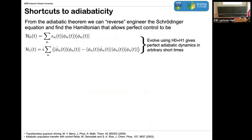So, a very quick crash course on what shortcuts to adiabaticity are. The adiabatic theorem gives us a recipe for how we can control a system already. What the adiabatic theorem tells us is that if the transition rates between two different eigenstates in the system — if I'm driving a system time-dependently — the transition rates between eigenstates is going to be related essentially to the energy gap.